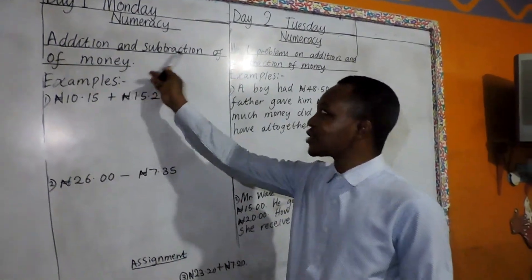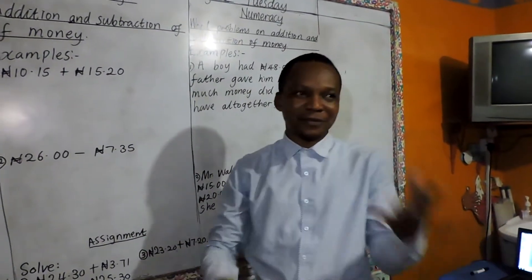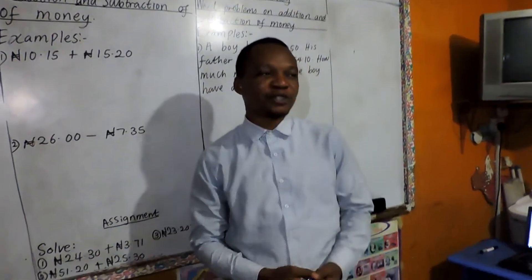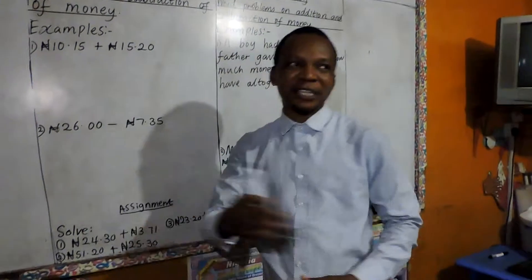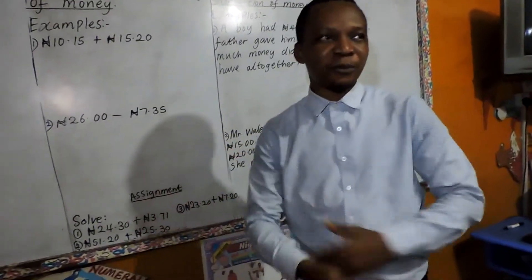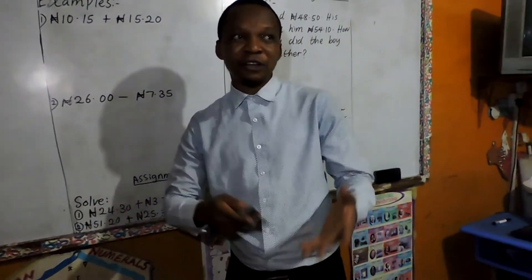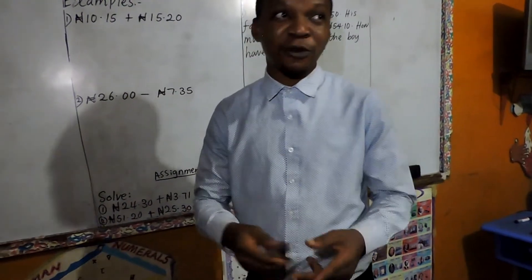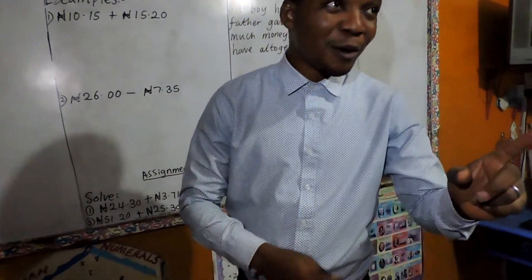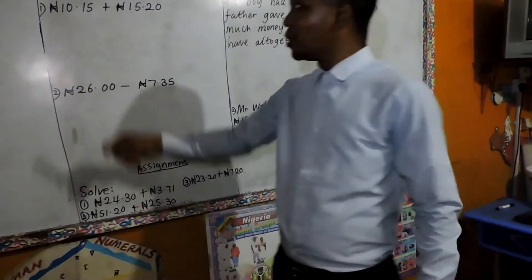We are going into addition and subtraction of money. Last time we talked about converting naira to kobo and from kobo to naira. As you know, 100 kobo will give us what? 1 naira. Good.